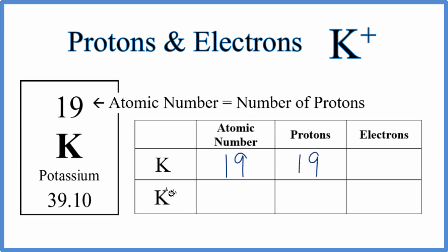When we're dealing with ions and the neutral element, the only thing that's different is going to be the electrons. Everything else is the same. So the atomic number for K and for K+, it's going to be 19.